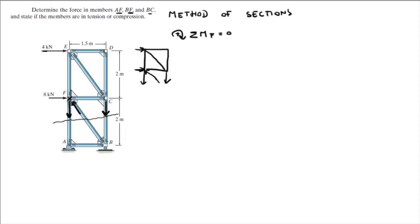So at F we got the moment being created by this 4 kN force, and we have the moment created by the member CB, this force right here. So only two components: the sum of the moments at F is equal to the moment created by the 4k, which is 4k times the lever arm, which goes from F to here, and that's a distance of 2 meters.